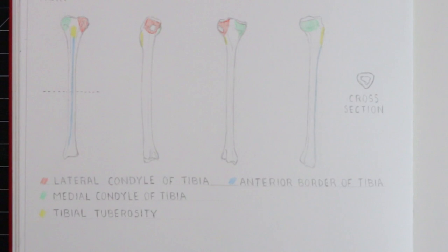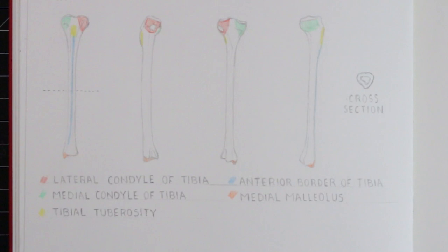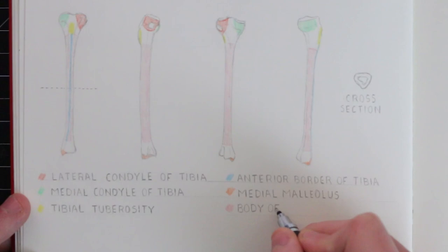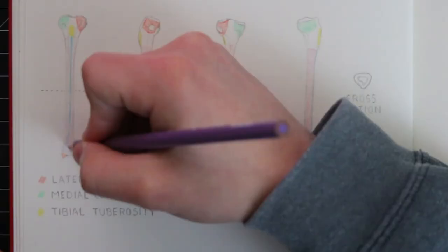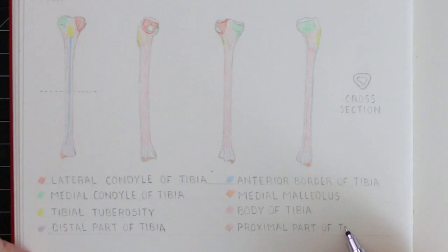At the bottom there is the medial malleolus, and this is a small protrusion of bone that looks similar to the styloid process at the end of the forearm bones. Then of course there is the body of the tibia, and then we have the distal end below and the proximal end of the bone at the top.